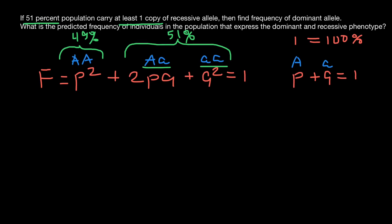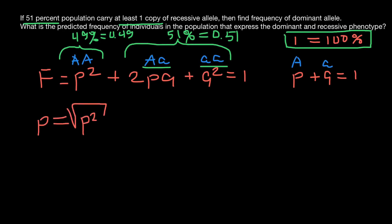That tells us that the homozygous dominant genotype makes the remaining 49%. So 49% equals 0.49 on the scale between 0 and 1. To find the frequency of the dominant allele P, we take the square root of P squared, which equals 0.49, giving us P equals 0.7.